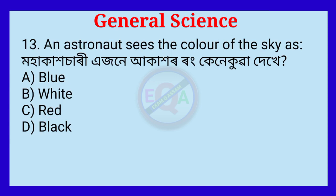Question number 13. An astronaut sees the color of the sky as — correct answer: black.